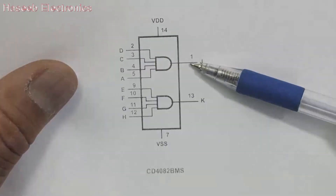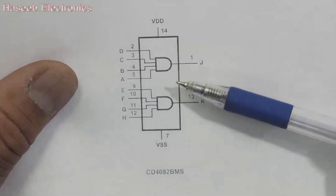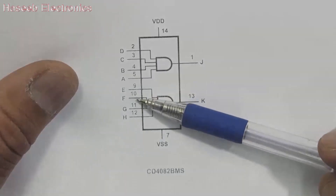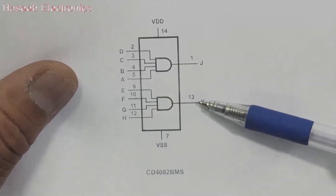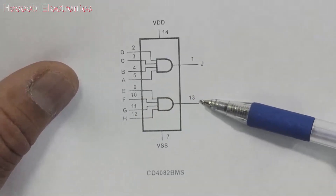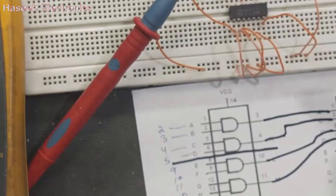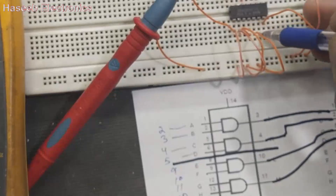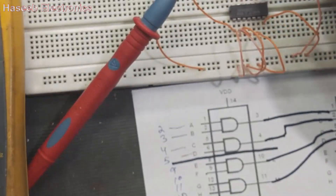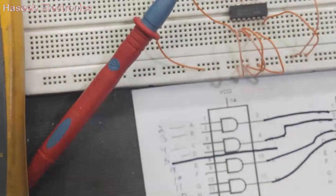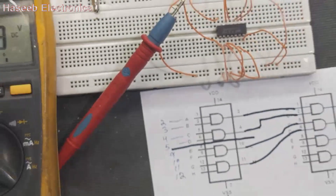For IC 4082, pins 2, 3, 4, and 5 are inputs, and pin number 1 is output. Pins 9, 10, 11, and 12 are inputs, and pin number 13 is output. Pin number 6 is blank and pin number 8 is blank — not used.